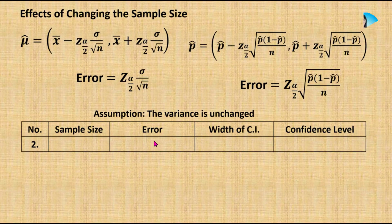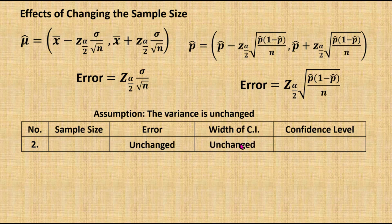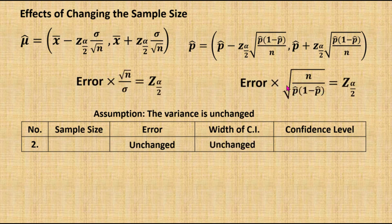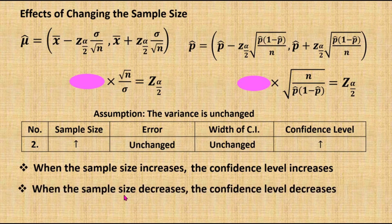Now if I wish to keep the estimation error unchanged, then the width of the confidence interval is also unchanged. When I rearrange the equation and ignore the value of the error, we can see that the sample size is directly proportional to the z value. So when the sample size increases, the z value also increases. Since the z value is related to the confidence level, when the z value increases, then the confidence level increases. Similarly, when the sample size decreases, the confidence level also decreases.